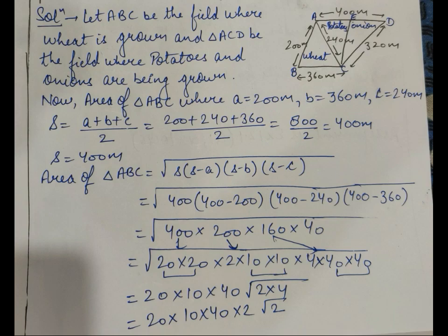According to the question, I have drawn a figure where let ABC be the field where wheat is grown and triangle ACD be the field where potatoes and onions are being grown. First, we will find the area of triangle ABC where A equals 200 meter, B equals 360 meter, and C equals 240 meter. We find the semi-perimeter by the formula A plus B plus C upon 2, giving us S as 400 meter.